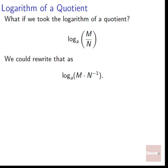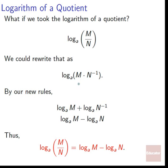What if we took the logarithm of a quotient? Log base a of M over N. We can rewrite that as M times N to the negative 1. From the rule for splitting products, we get log a M plus log a of N to the negative 1. We also have the rule that we can bring down exponents — log of x to the n becomes n times log of x. Bringing down the negative 1 just becomes a minus sign. So we've got log a of M minus log a of N. Thus, log a of M over N equals log a M minus log a N — a quotient becomes a difference.